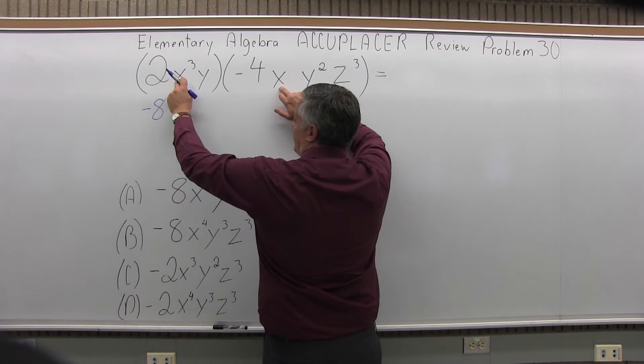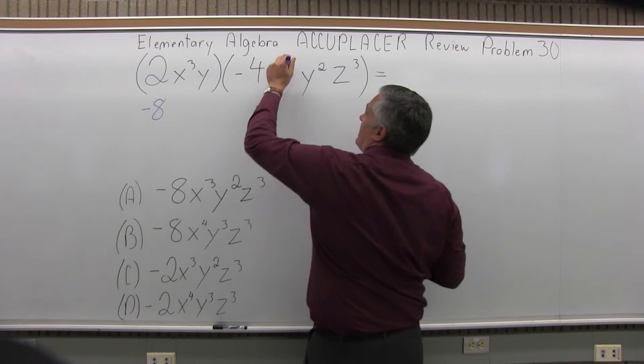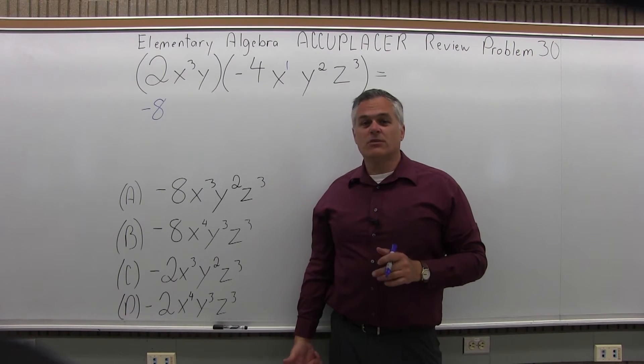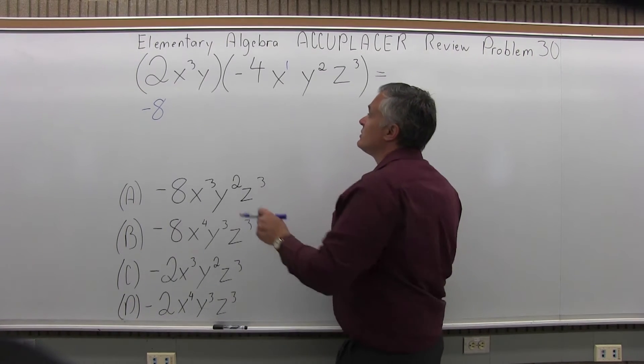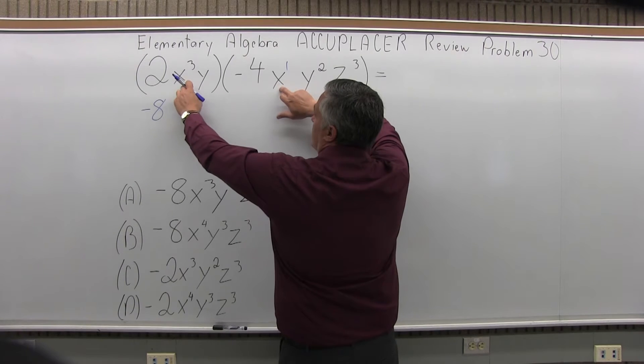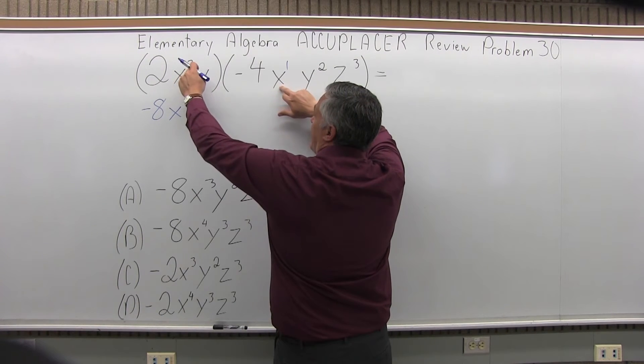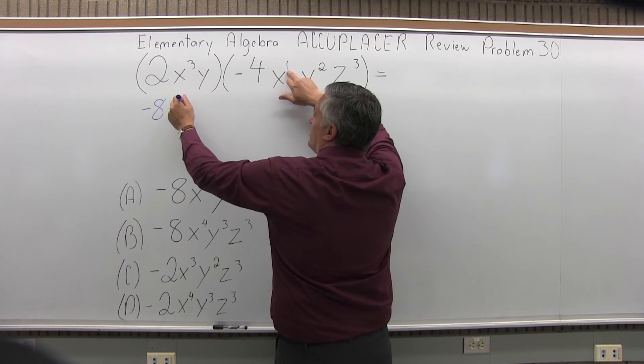Next, the x's. You have x³ times x. The x in the second set of parentheses does not have an exponent written, but you can assume it's the first power. When you're multiplying two things that have the same base, you want to add the exponents. So I'm going to have x to the 3 plus 1, which would be fourth power.